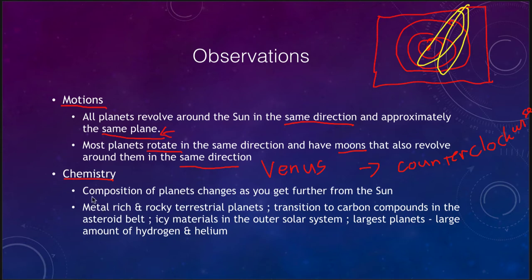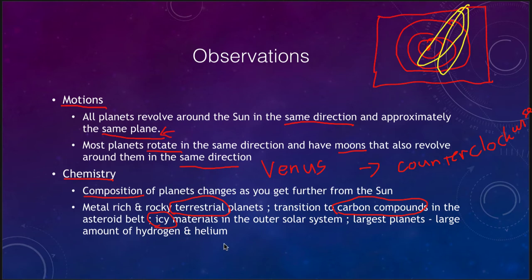There is an overall motion to the solar system that we have to explain. In terms of chemistry, we find that the composition of the planets changes as you get further away from the Sun. Close to the Sun we have the terrestrial planets, which are metal and rocky. As we go into the asteroid belt, we transition more into carbon compounds, and in the outer solar system we get icy materials and the largest planets with lots of hydrogen and helium. That's something else we have to explain.